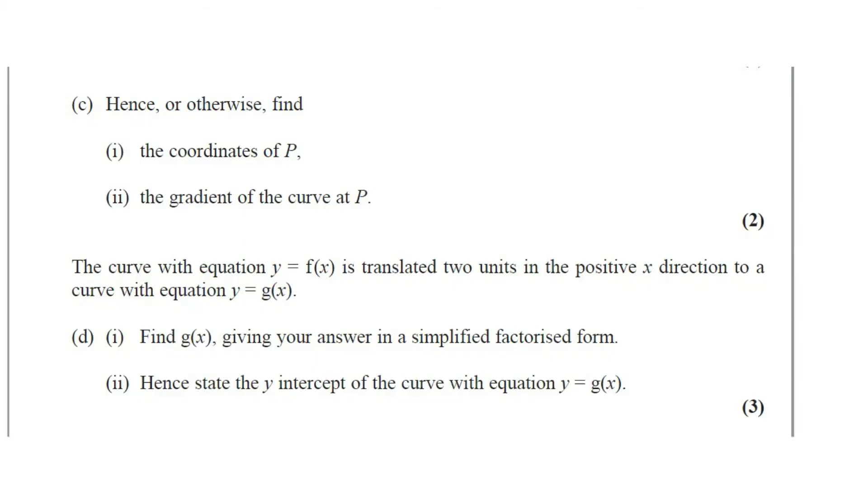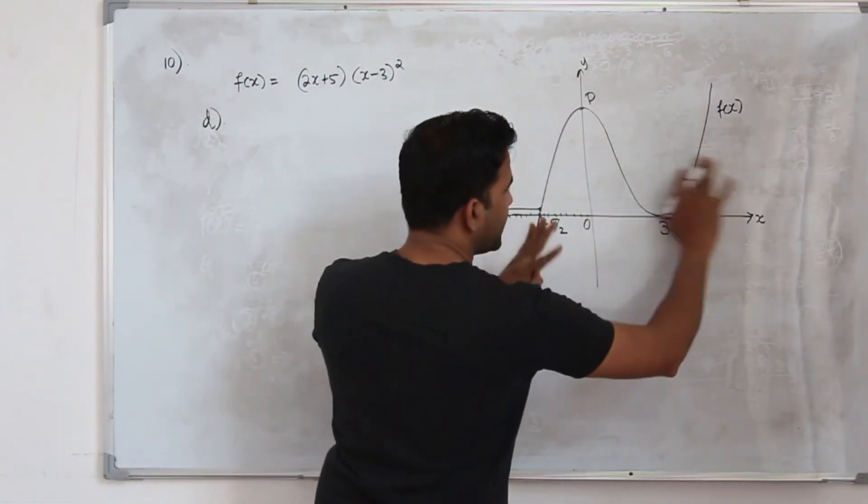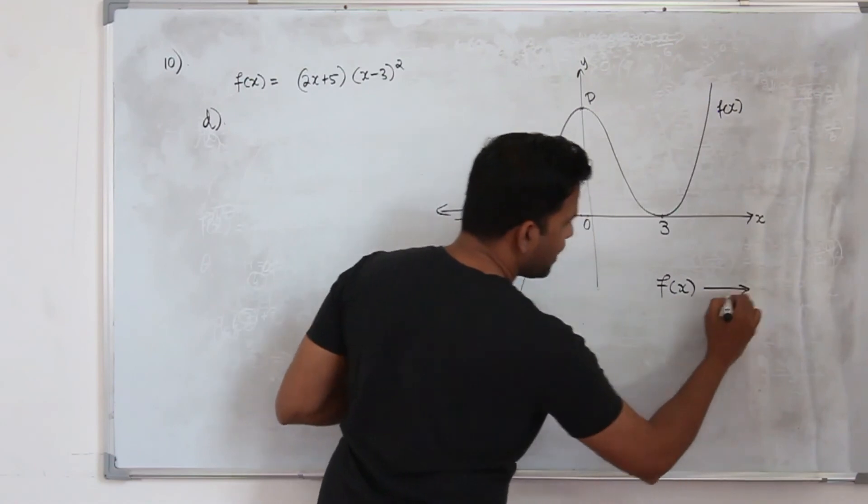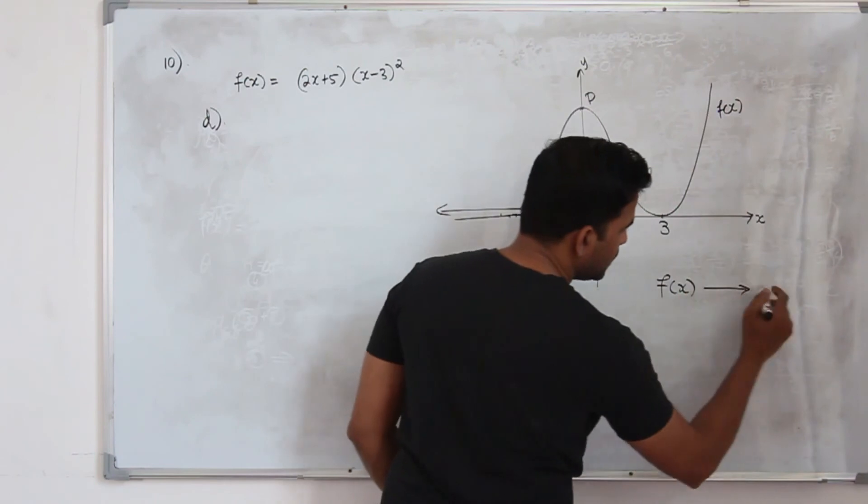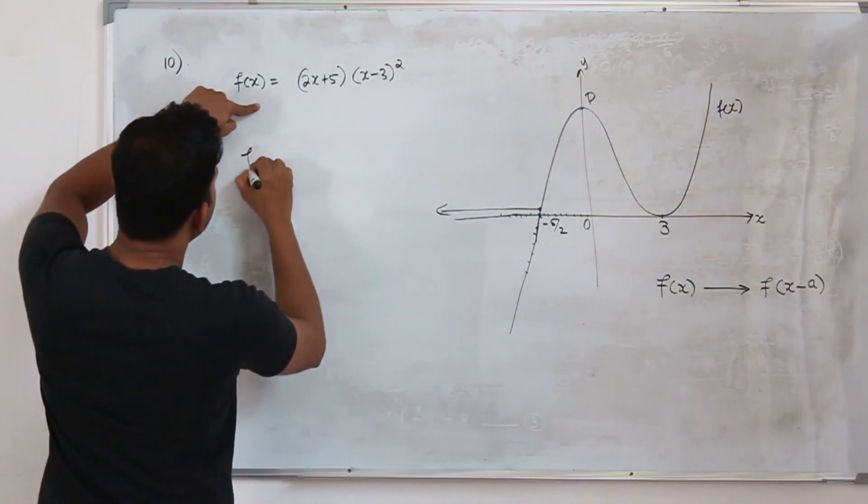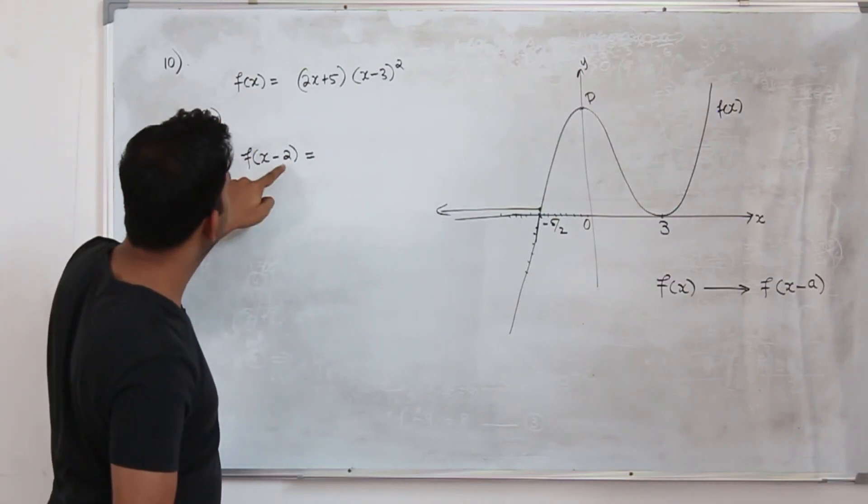Now the curve with the equation f(x) is translated 2 units in the positive x direction to a curve with the equation y equals g(x). Part D number 1: find g(x) giving your answer in a simplified factorized form. Then the second question: hence state the y-intercept of the curve with equation y equals g(x). The question carries 3 marks. In part D we are translating this graph to the positive direction of x axis 2 units. In graphs and transformation we learn if a graph is being translated to the positive direction of x axis, the function will become x minus a.